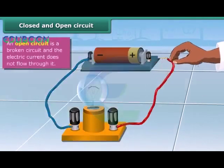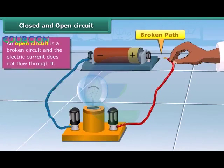Disconnect one of the wires. You will find that the path is broken now. Also, the bulb doesn't light up since electricity can't flow through this circuit. A broken path is known as an open circuit.